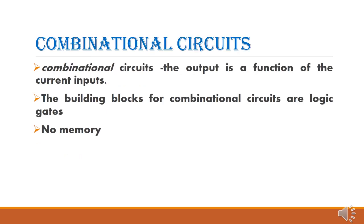First, let us see what is a combinational circuit. A combinational circuit means the output depends on the current inputs alone. That means it does not depend on the past values or future values. Therefore, the combinational circuit does not have any memory. The important building blocks of a combinational circuit are logic gates.